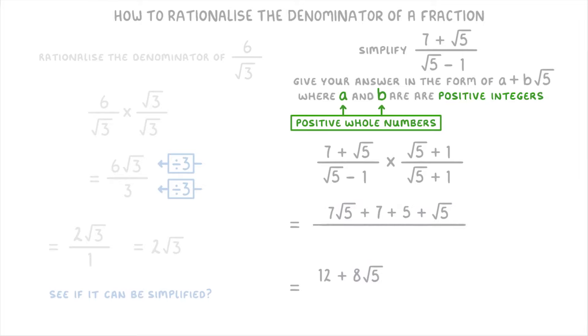And for the denominator, you should get 5 plus root 5 minus root 5 minus 1, which simplifies to just 4. Because the positive and negative root 5 cancel out. And we're left with 5 minus 1, which is 4.